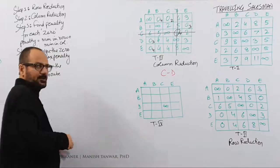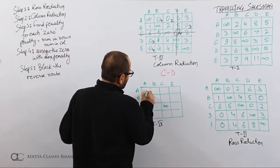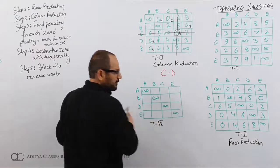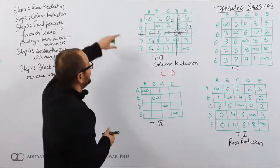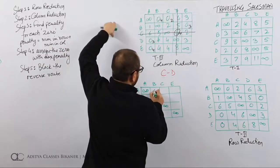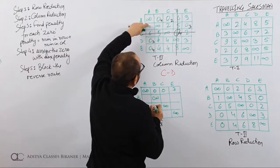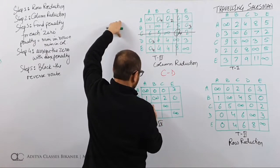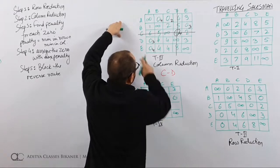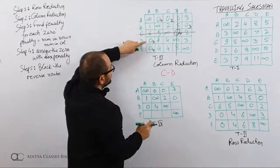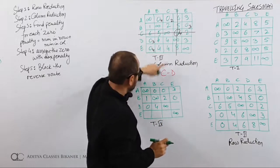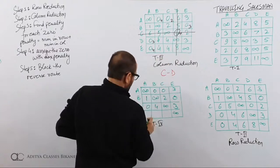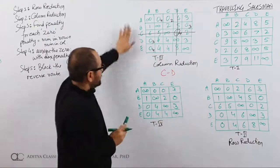Self routes should also be blocked: A to A, B to B, D to D, E to E. In travelling salesman, the matrix keeps reducing — from 5×5 it becomes 4×4. The remaining values for T4 are: row A gives 0, 0, 3; row B gives 1, 2, 0; row D gives 0, 4, 4 (with D to C blocked as infinity); row E gives 0, 4, 4.